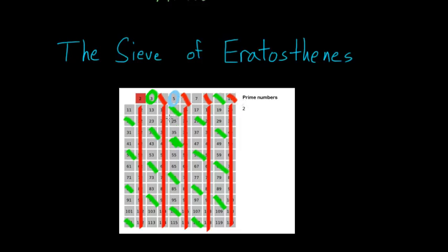So 10, 15, 20, 25, 30, 35, and so forth. And after the number 5, the next open space is 7. So then we'll go through and eliminate all of the multiples of 7.